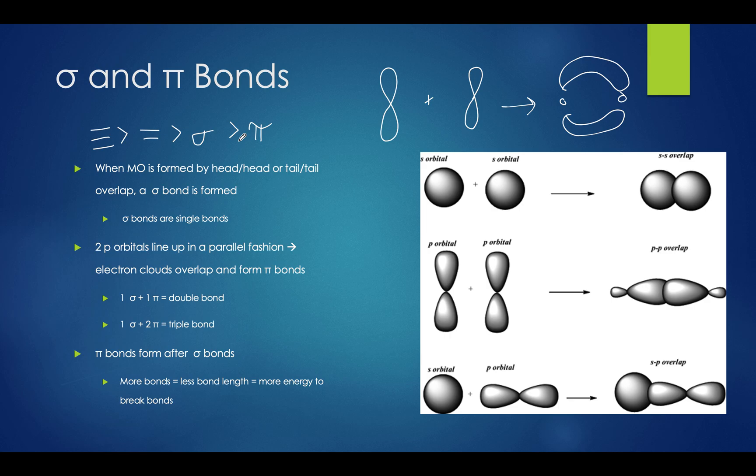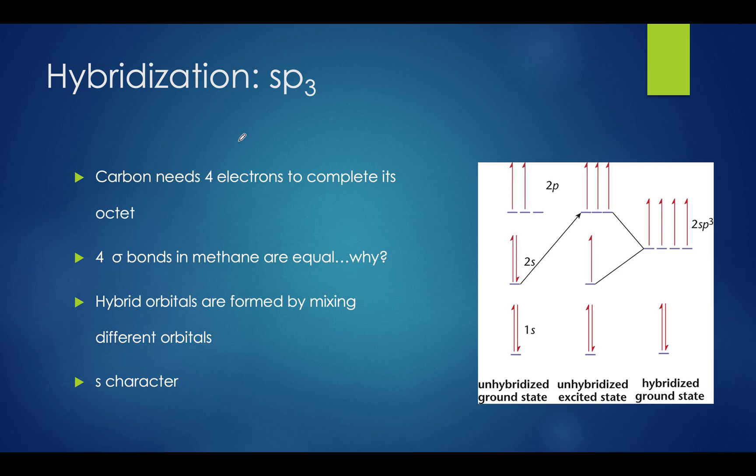Now that we've covered molecular orbitals, let's finish this video off with hybridization. We know that carbon needs four electrons to complete its octet. We also know that four sigma bonds in methane are equal. But why? Wouldn't there be an asymmetric distribution? We learned in our general chemistry classes that there would be two valence electrons in the 2s orbital, and one each in the px and py orbital. Why are the sigma bonds in methane equal then? Well, the reason why is because of hybridization. Hybridization allows hybrid orbitals to be formed by mixing different orbitals.